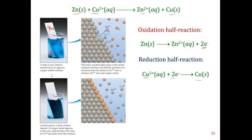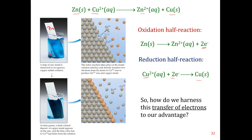Notice what's missing — we're not harnessing these electrons. They're just going from zinc to copper directly, and there's nothing in the middle to capture them. There's just a redox reaction occurring and nothing else. The question is: how can we harness the electron transfer and make it do something to our advantage?